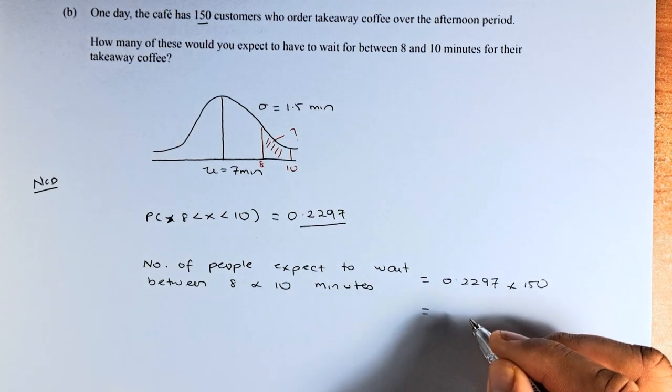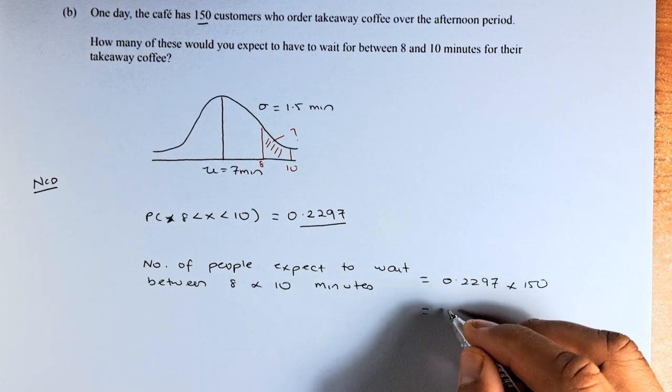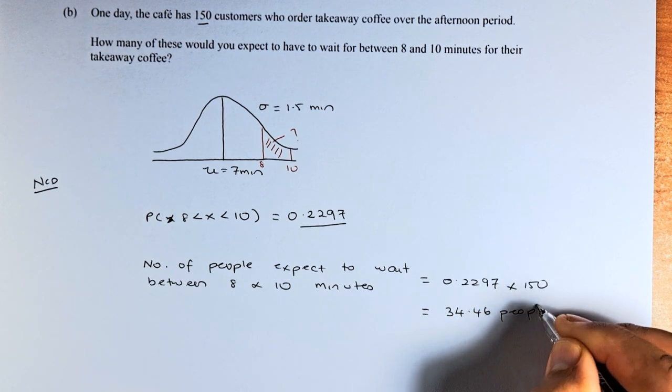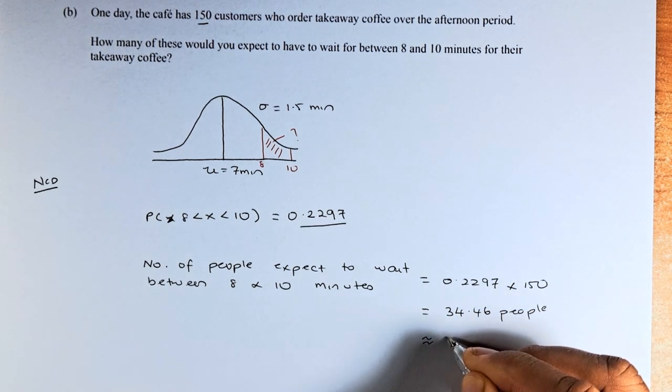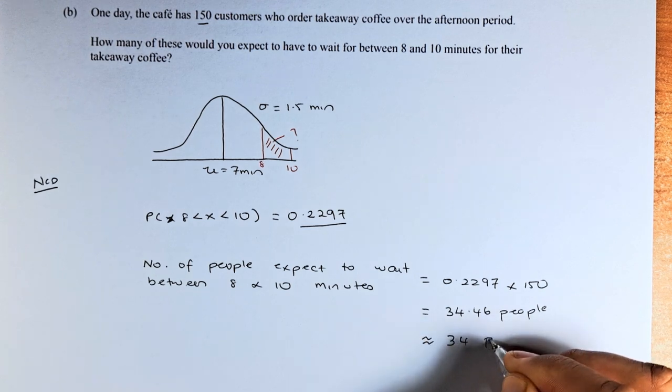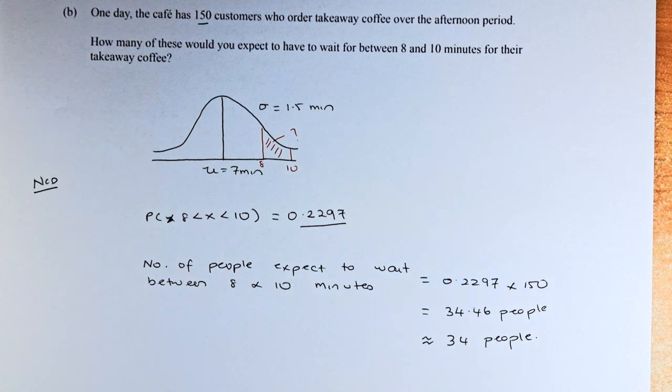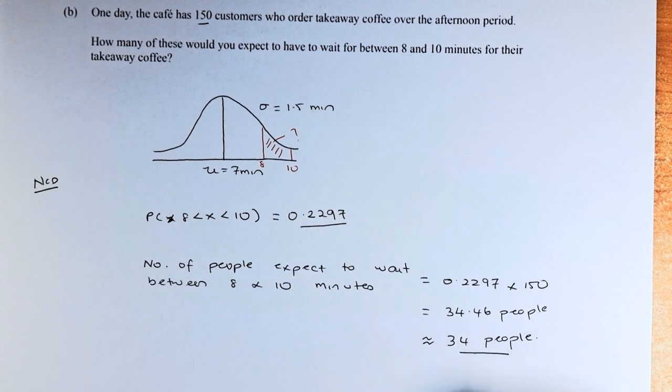Put it in your calculator and the answer will come up to 34.46 people. Remember, you can't have 34.46, so the answer is 34 people. You round down. Even if you put 35, that will be acceptable in statistics. So that will be the answer for part B of this question.